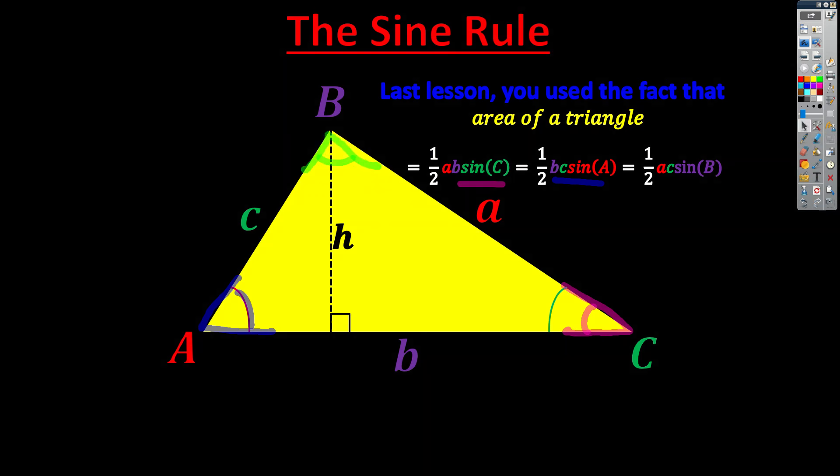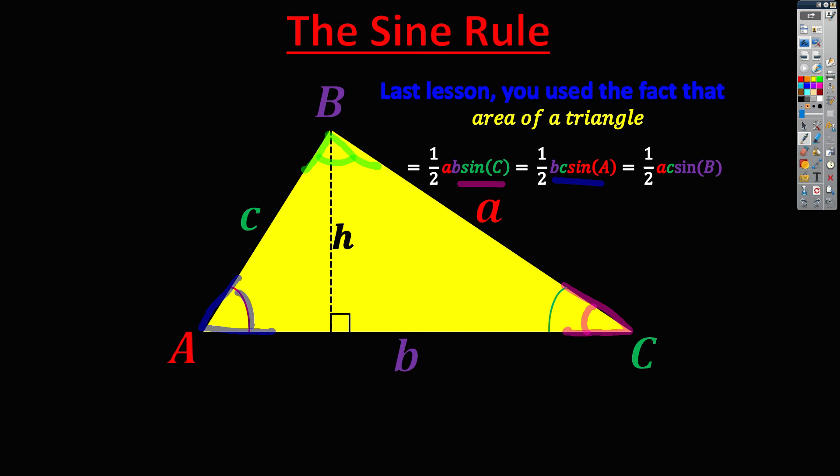So these three expressions are clearly equal because they each give you the area of the triangle. Now, it only takes one extra step to get the sine rule proved, and that's to divide all three sides by a half ABC.